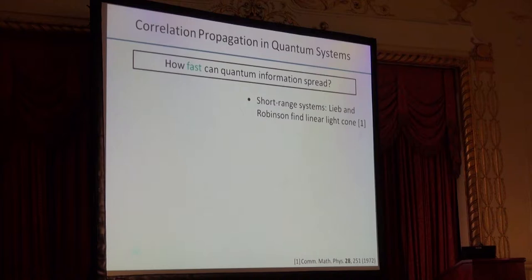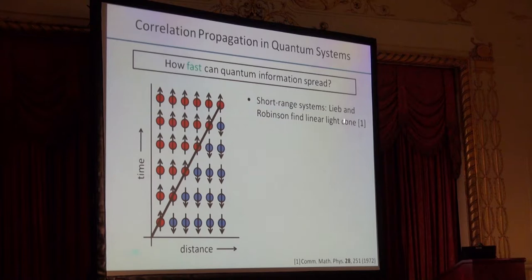This is a question that was originally thought of and explored deeply by Lieb and Robinson back in the 70s. They considered short-range interacting systems, with only nearest neighbor type interactions. What they found is that you have a linear light cone for quantum information propagation. In particular, if you start with some excitation at one end of the chain, then as you go forward in time, the news of that excitation can travel along the chain at some constant velocity. Just like the light cones from special relativity, anything outside doesn't have information about the excitations on this side of the system.